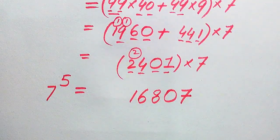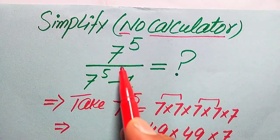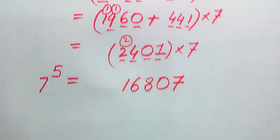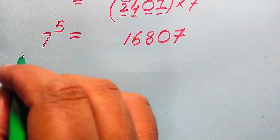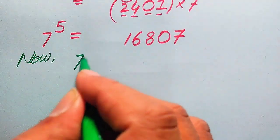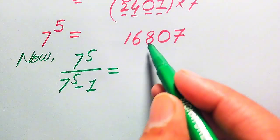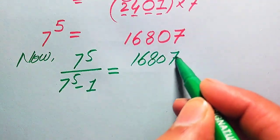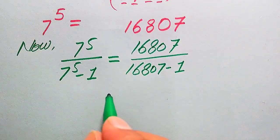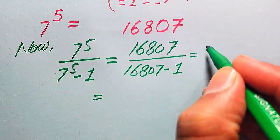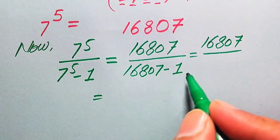Now we move backward and substitute this value of 7 to the power of 5 into both the numerator and denominator of the given question. The given expression is 7 to the power of 5 divided by 7 to the power of 5 minus 1, which becomes 16807 divided by 16807 minus 1, and 16807 minus 1 equals 16806.